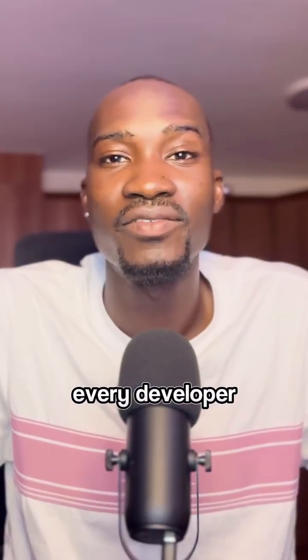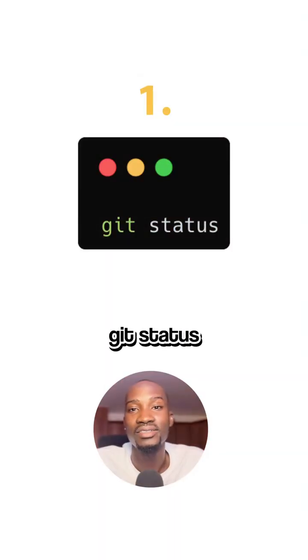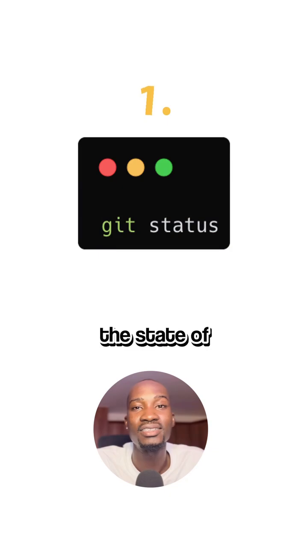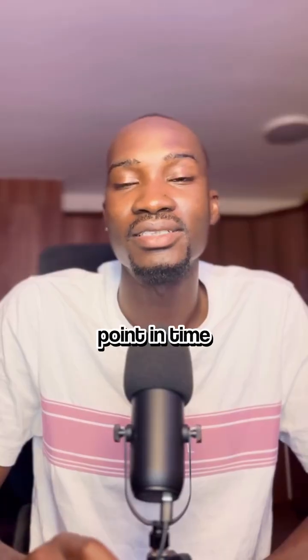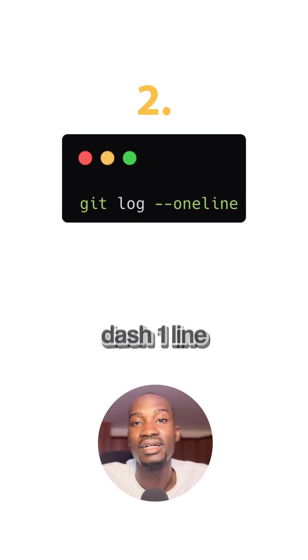Five git commands every developer should know. Number one: git status. Git status is used to check the state of your repository at any given point in time. Number two: git log, or you can do git log --oneline.